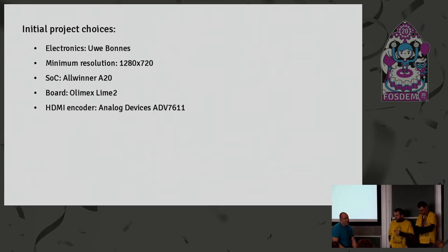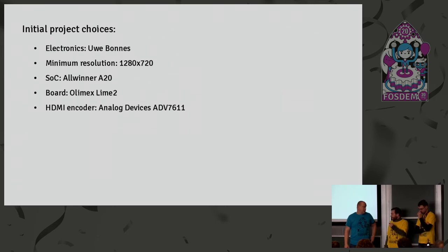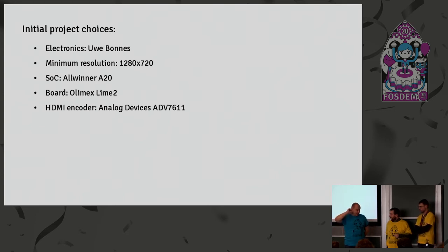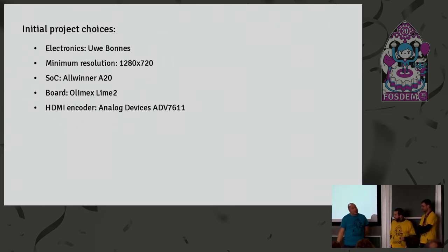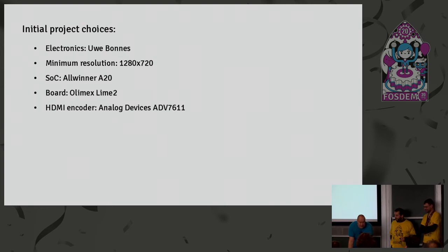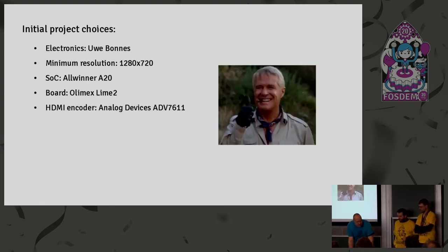We ended up choosing the Olimex Lime 2 but there will be a separate slide about that. We first thought about the TFP401 module from Texas Instruments, which has a module from Adafruit, but the issue is that it's a DVI-to-parallel decoder — no audio. We thought about using a splitter and one of those HDMI-to-I2S decoders, but they're just abusing the HDMI cable and doing nothing else. We looked further and found the ADV7611 from Analog Devices. At embedded world we chatted with Analog Devices folks — apparently they are one of the most open source friendly makers of these chips.